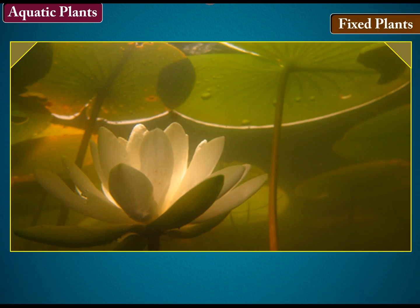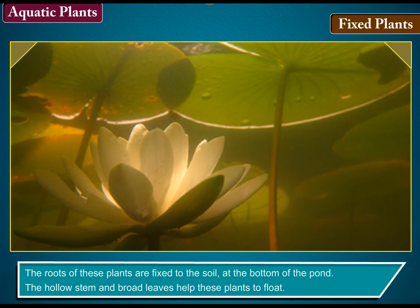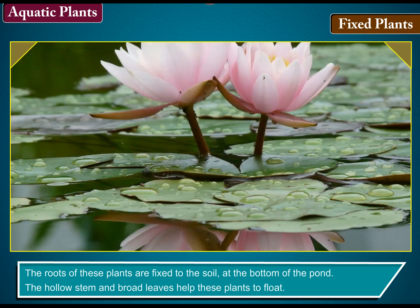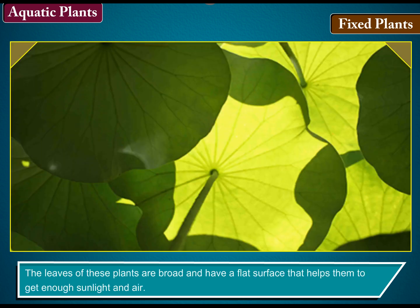Fixed plants: the roots of these plants are fixed to the soil at the bottom of the pond. The hollow stem and broad leaves help these plants to float. The leaves are broad and have a flat surface that helps them to get enough sunlight and air.